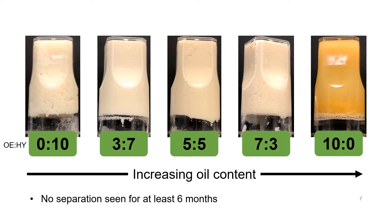We were able to successfully make bi-gels. Shown here on the slide are images of some of the gels. These images were not inverted on the computer; rather, we took the images like this to highlight that the gels are able to support their own weight. All the way on the left we have the pure hydrogel, with increasing oil content as you go right, and the pure oleogel all the way on the right. The bi-gels in the middle — the 3-7, 5-5, and 7-3 — are smooth and homogenous appearing. No separation occurred for at least six months. The gels shown were made at 15% protein in the hydrogel and 10% water in the oleogel, though the other formulations looked fairly similar.